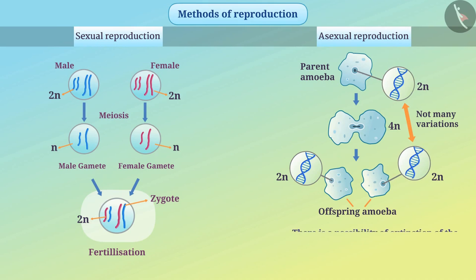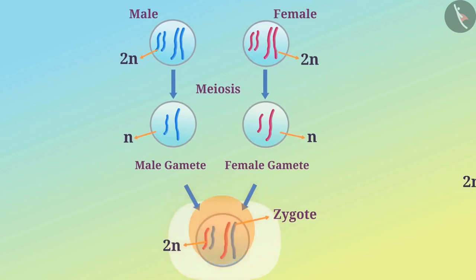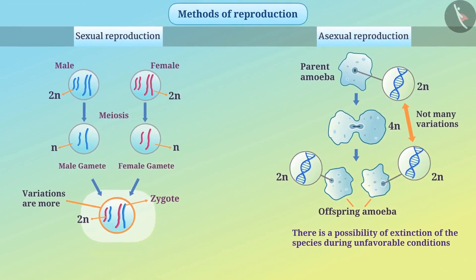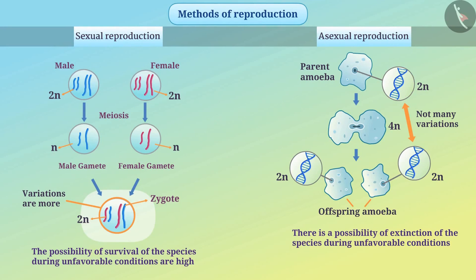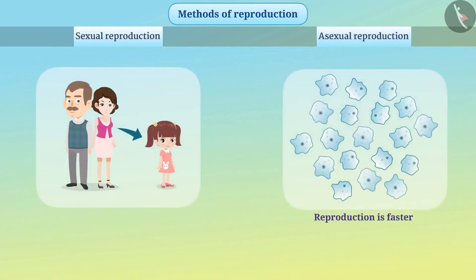Due to this, there is a possibility of extinction of the species during unfavorable conditions. Asexual reproduction is faster compared to sexual reproduction. In sexual reproduction, the DNA of offspring is produced from the combination of both parents, therefore variations are more. Consequently, the possibility of survival of the species during unfavorable conditions is higher.